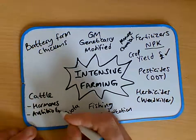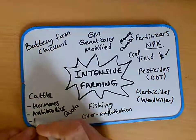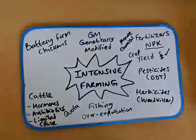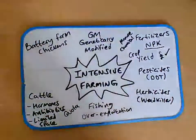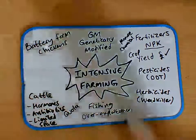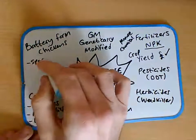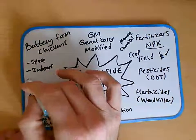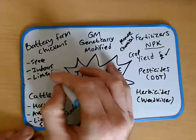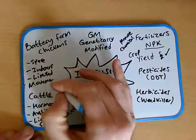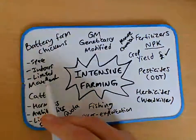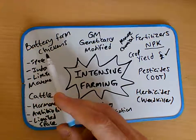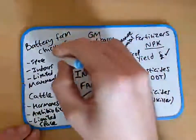Cattle are heavily exploited — they're given hormones and lots of antibiotics to keep them healthy, and they're given limited space, especially in cattle sheds, exploited just for milk or meat. Battery-farmed chickens also have limited space, are kept indoors with limited movement — all designed so they don't waste energy, so all the energy goes into producing meat or eggs.